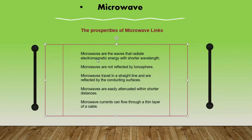The properties of microwave length. Microwaves are waves that radiate electromagnetic energy with a shorter wavelength. Microwaves are not reflected by the ionosphere. Microwaves travel in a straight line and are reflected by conducting surfaces. Microwaves are easily attenuated within shorter distances, and microwave currents can flow through a thin layer of cable.